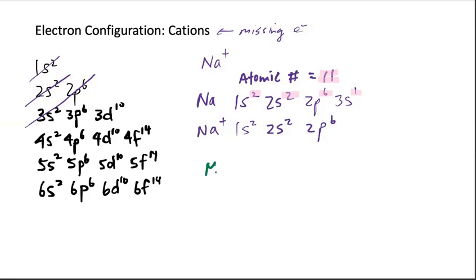Now let's do another one. Let's say we have Mg2 plus. So same thing. Mg, the atomic number is, atomic number is 12. So we will write it down. So that would be 1s2, 2s2, 2p6, 3s2.